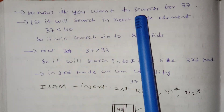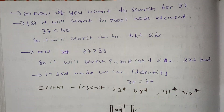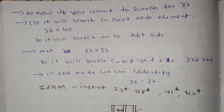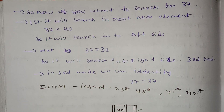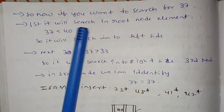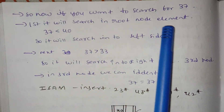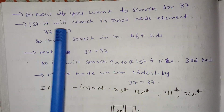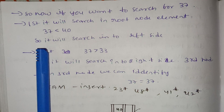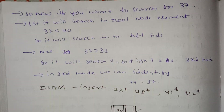Now if we want to search for 37, we first check the root node element. Since 37 is less than 40, it will search on the left side.